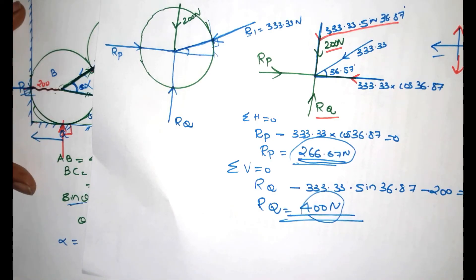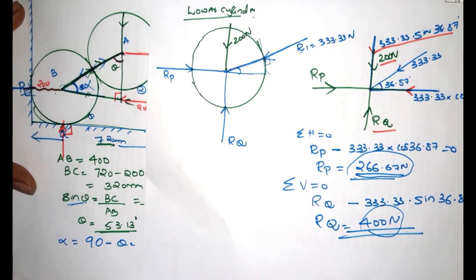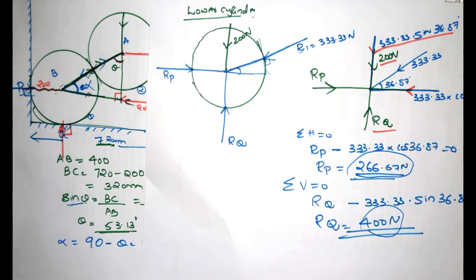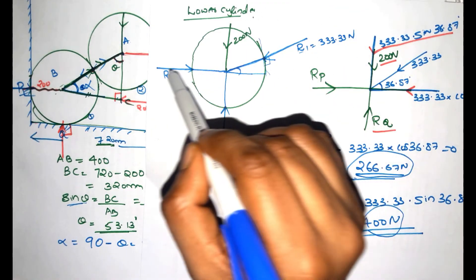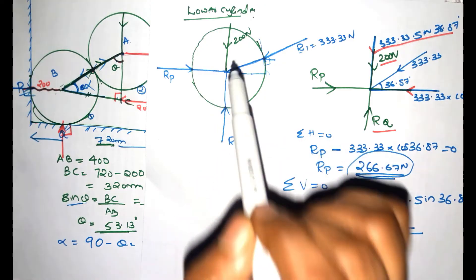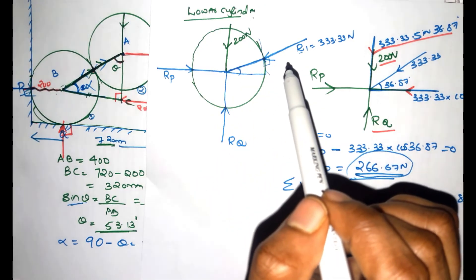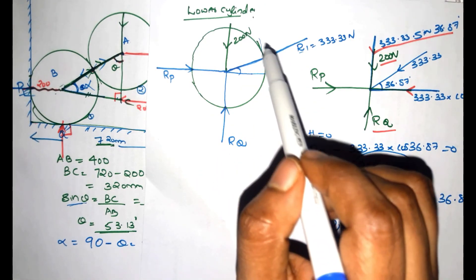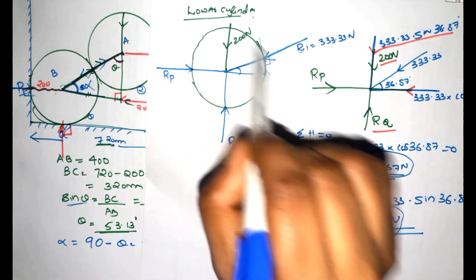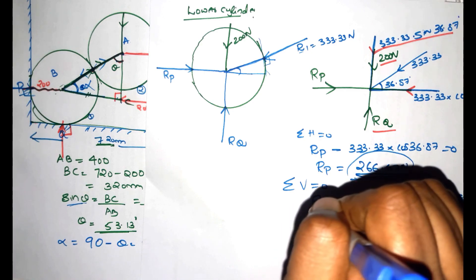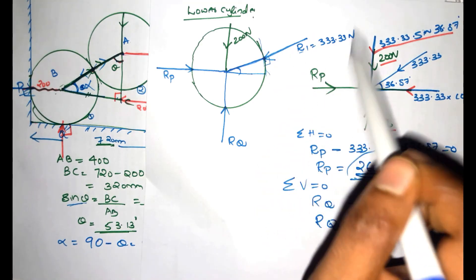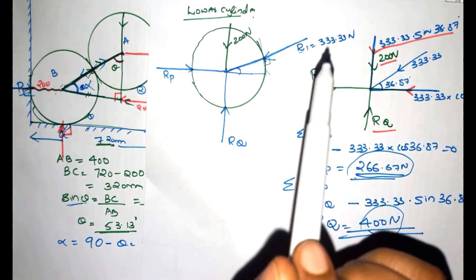Then we get all the reactions. If you have problems with the free body diagram, you can use this approach: the weight acts vertically downward, the reactions are perpendicular to the surface. Use the directions and the angle to resolve all forces.